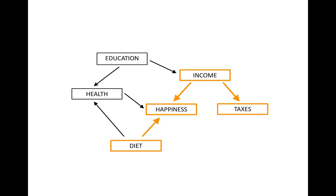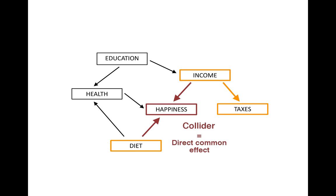For example, the path from diet to taxes is undirected for two reasons. First, both of the edges involving happiness point into happiness. And second, both of the edges involving income point out of income. Happiness is a collider on this path because the arrowheads collide at happiness. A collider on a path is a direct common effect of two variables on the path.